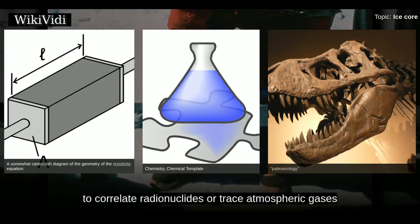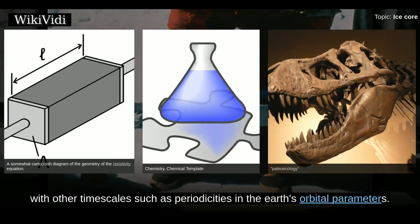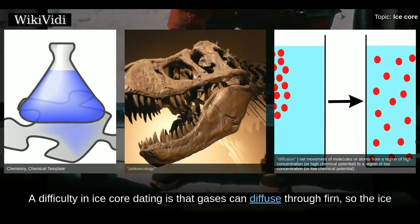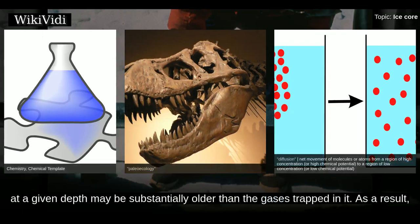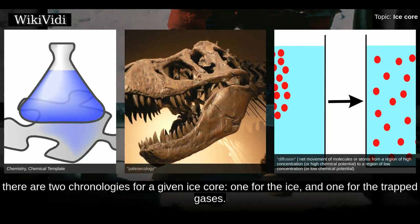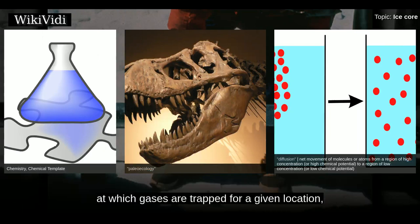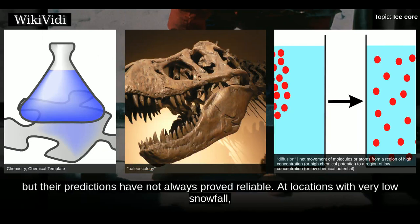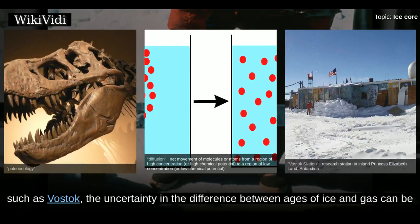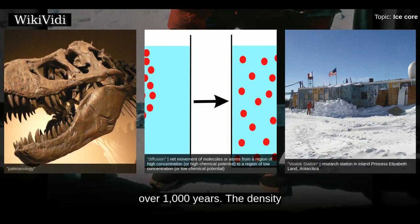Another method is to correlate radionuclides or trace atmospheric gases with other time scales, such as periodicities in the Earth's orbital parameters. A difficulty in ice core dating is that gases can diffuse through firn, so the ice at a given depth may be substantially older than the gases trapped in it. As a result, there are two chronologies for a given ice core: one for the ice and one for the trapped gases. At locations with very low snowfall, such as Vostok, the uncertainty in the difference between ages of ice and gas can be over 1,000 years.